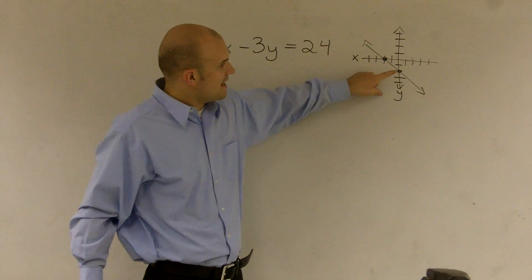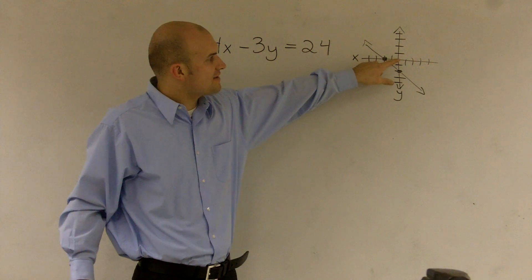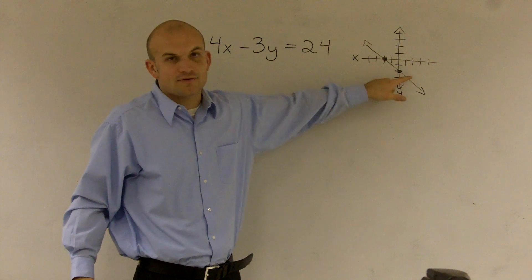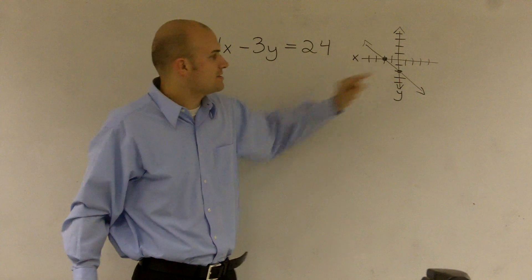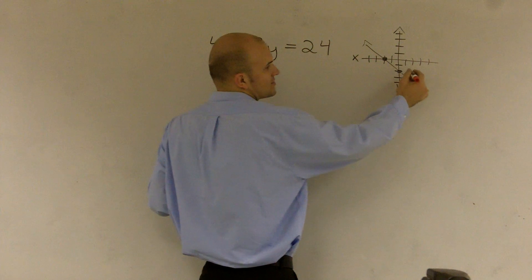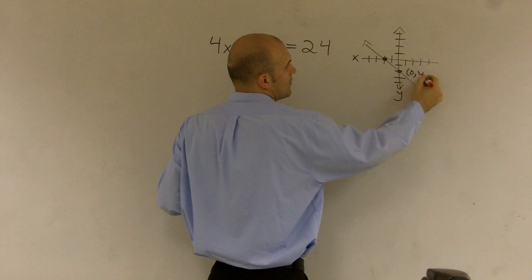And what you'll notice is, on the y-intercept, my x-value is not left or right. So I did not move at all on this x-axis for my y-intercept. Therefore, the y-intercept is what we call 0 comma y.